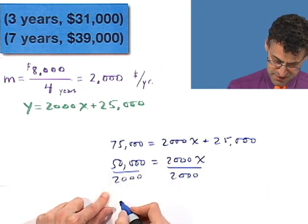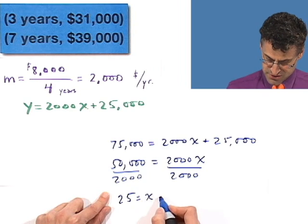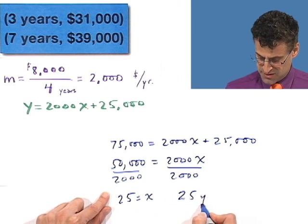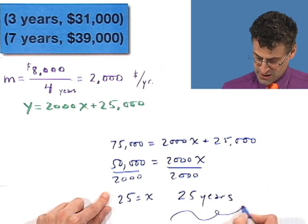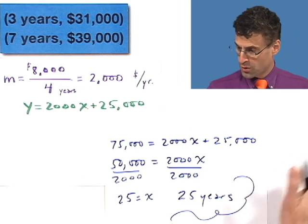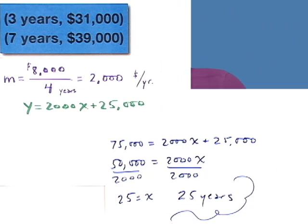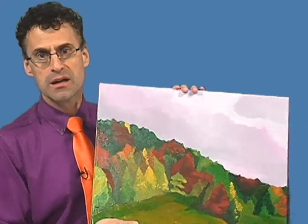I see, doop doop doop, I see 25 equals x. And so 25 years, that's how long I'll have to wait in order for this masterpiece to be worth $75,000. This, my friend, is my retirement.